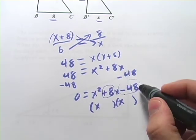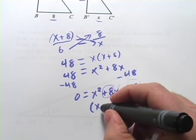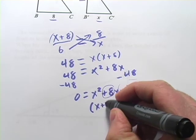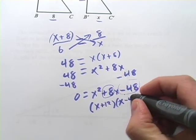And I'm thinking with the factors of 48, what would do that would be 12 and 4 if you have a positive 12 and a negative 4. So I think we've got X plus 12 and X minus 4.